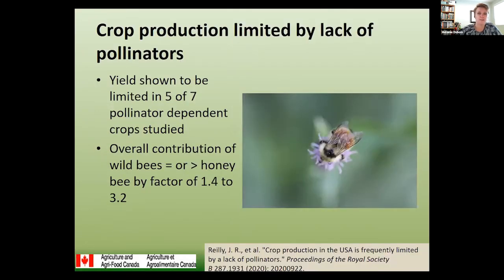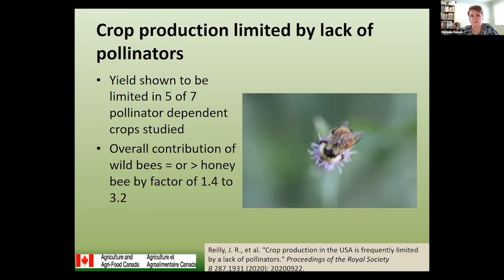A study published in 2020 looked at crop yields in the US and found that about five to seven pollinator-dependent crops are showing yield losses — they're in areas with a high dependency on pollinators, but the pollinators simply aren't there, so they're just not getting the yield they should.